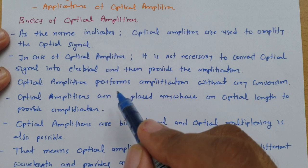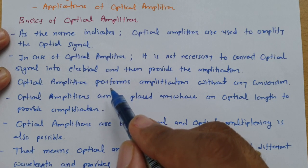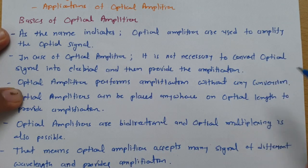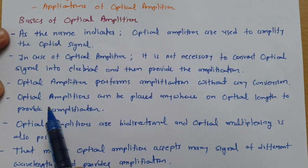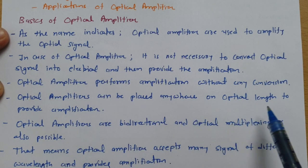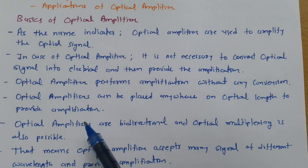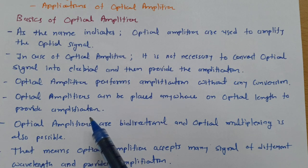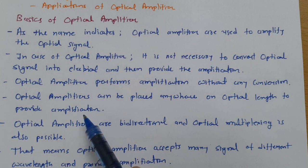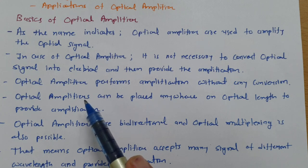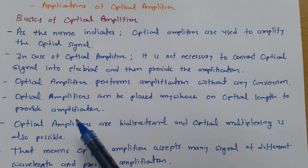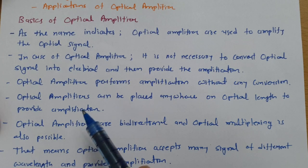In an Optical Amplifier, we amplify the optical signal only. It performs amplification without any conversion. An Optical Amplifier can be placed anywhere along the optical length to provide amplification — we can use it anywhere along the optical cable. Based on its position, there are multiple applications, which I will explain so it is clear how we can use Optical Amplifiers at different positions.